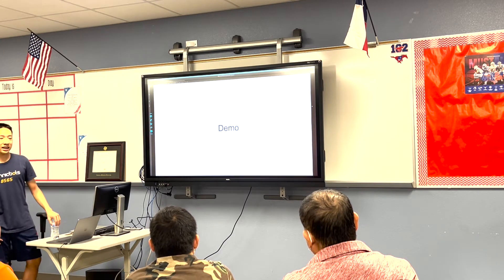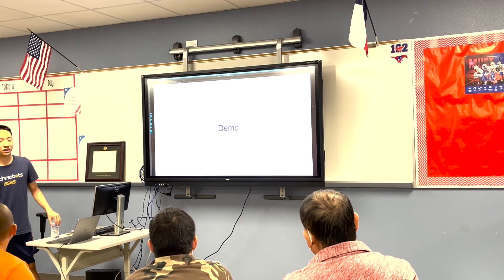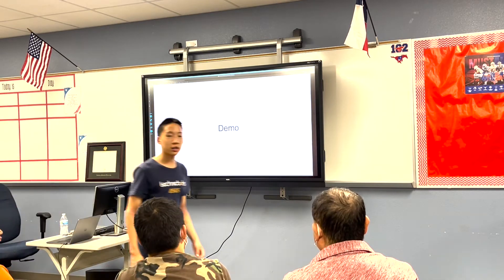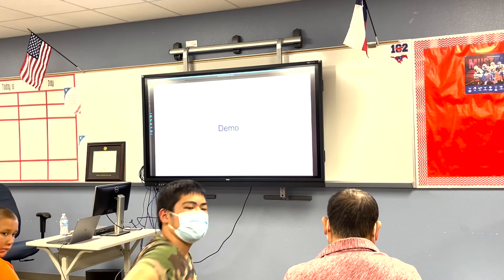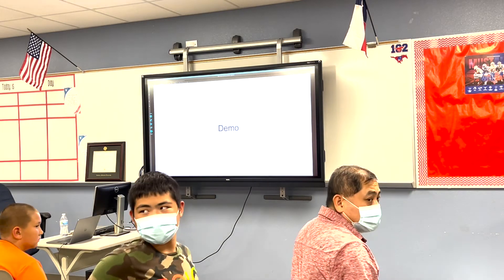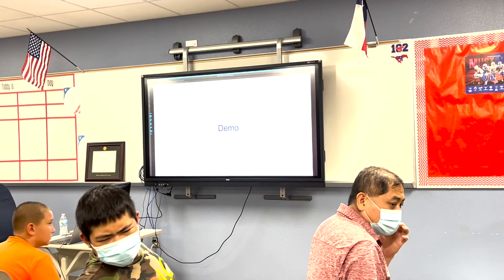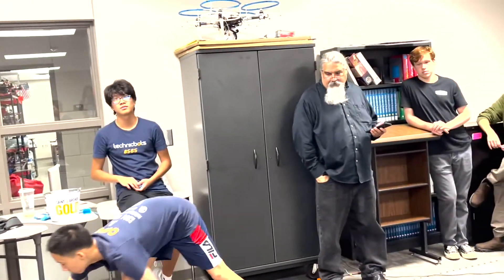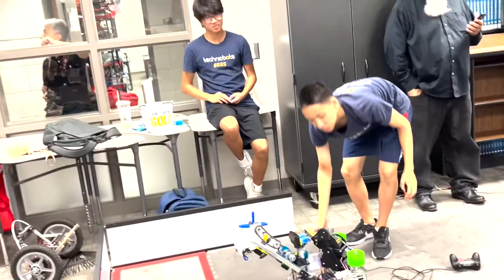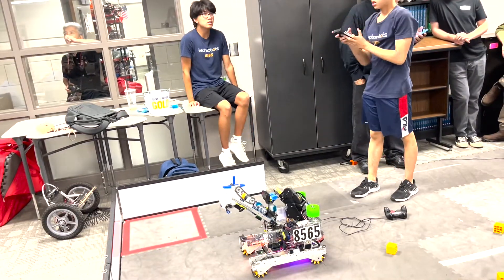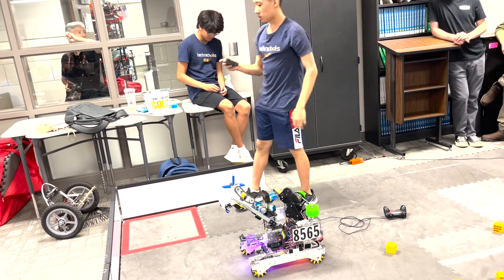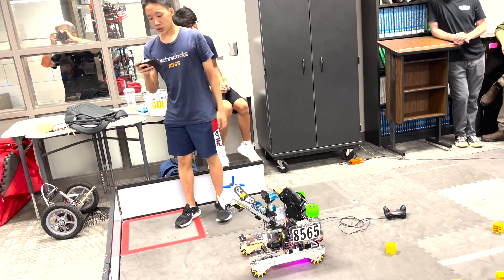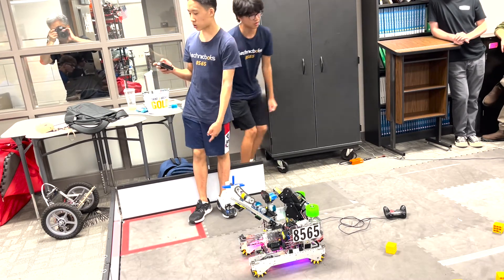If all of this didn't make sense, hopefully this live demo will show how everything works. So if everything runs properly, the robot should run to about here — that's like your standard Roadrunner path.